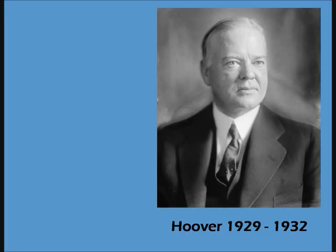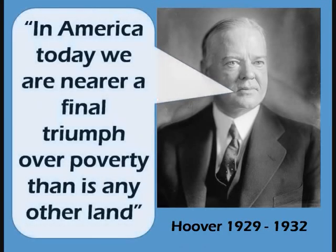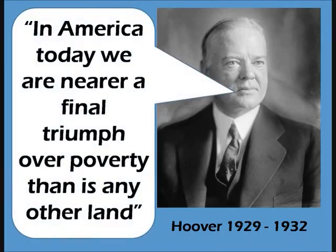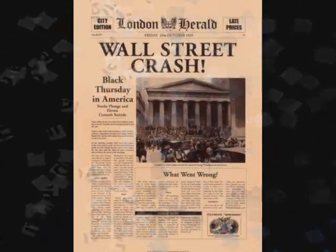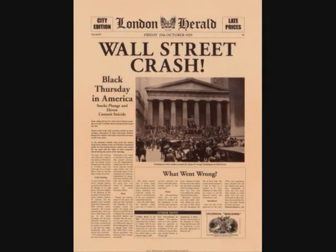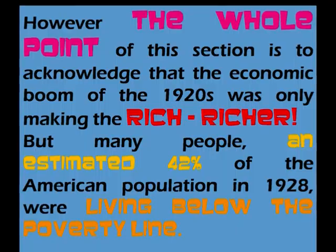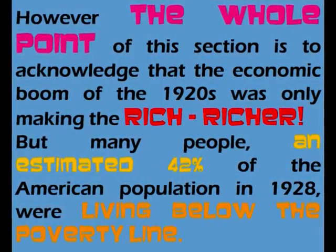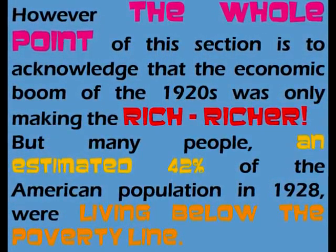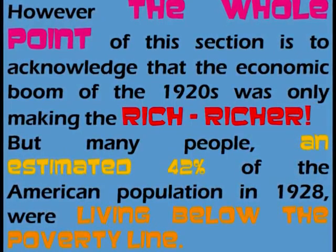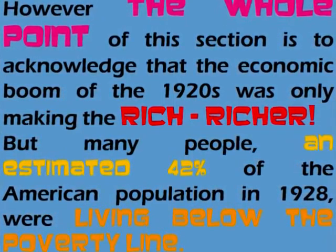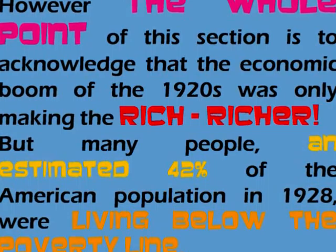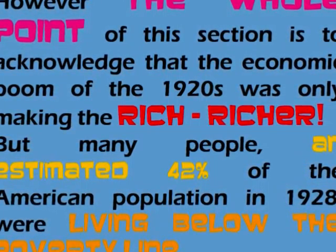Remember the poorly chosen words of President Herbert Hoover in 1929: 'In America today, we are nearer a final triumph over poverty than is any other land.' This phrase obviously came back to haunt him after the Wall Street Crash and ensuing Great Depression. However, the whole point of this section is to acknowledge that the economic boom of the 1920s was only making the rich richer, but that many people — an estimated 42% of the American population in 1928 — were living below the poverty line.